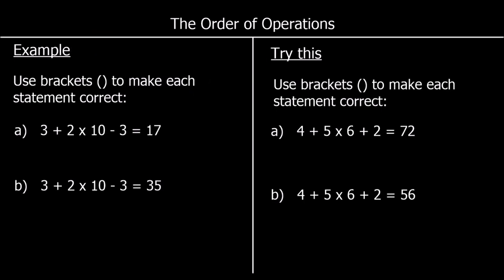Here we have a different question: this says use brackets to make each statement correct. We know the order of operations — brackets come first, then indices, then our multiplication and division, then addition and subtraction. At the moment, the multiplication is going to take place first, so we'll have 2 times 10, which becomes 20. 3 plus 20 is 23, take away 3 is 20, and that's not equal to 17.